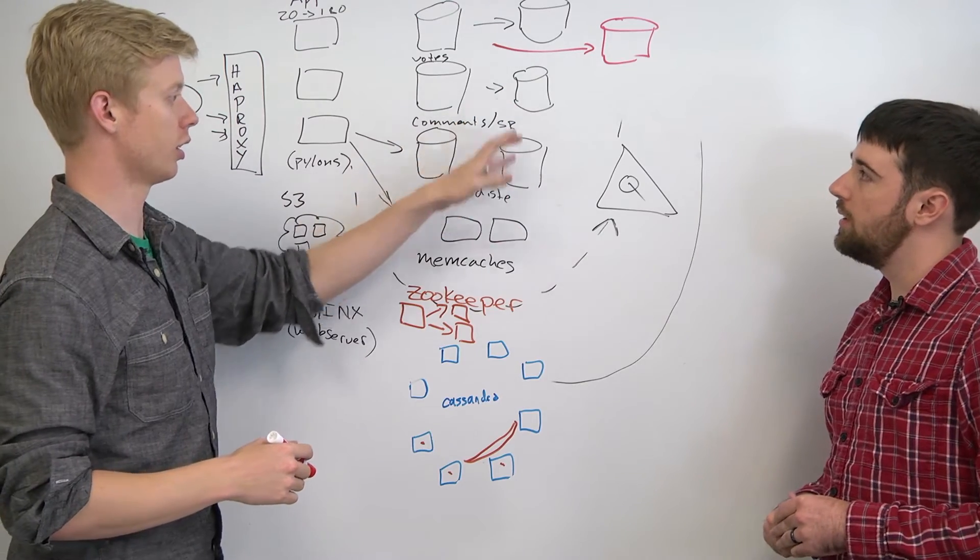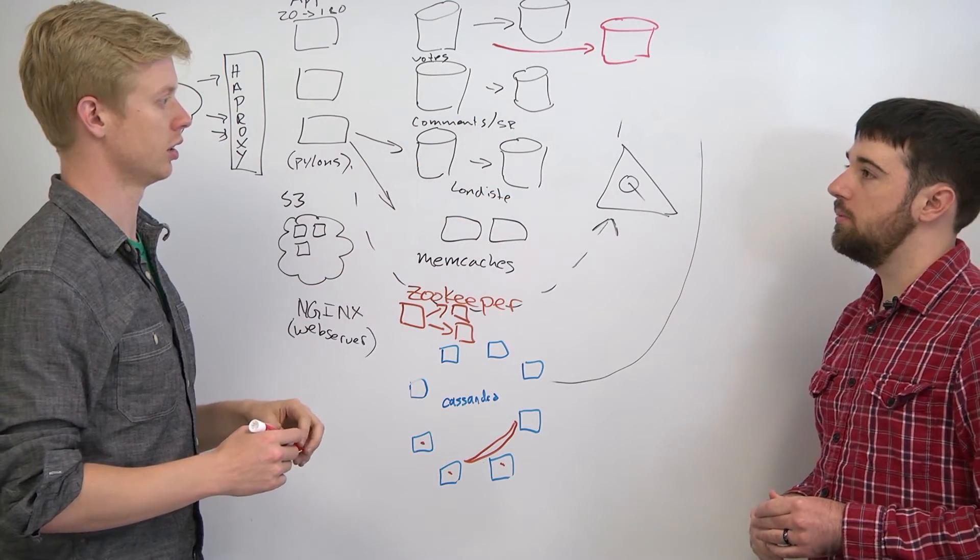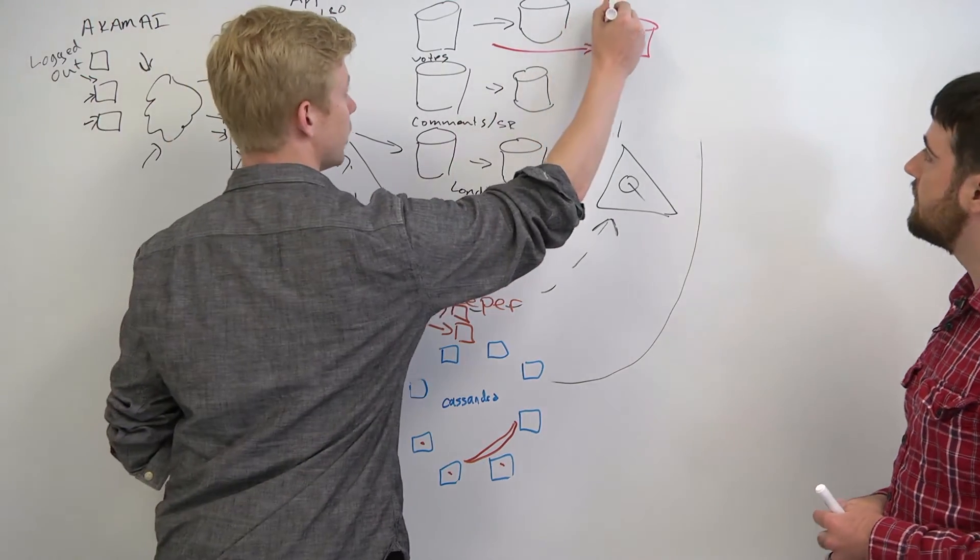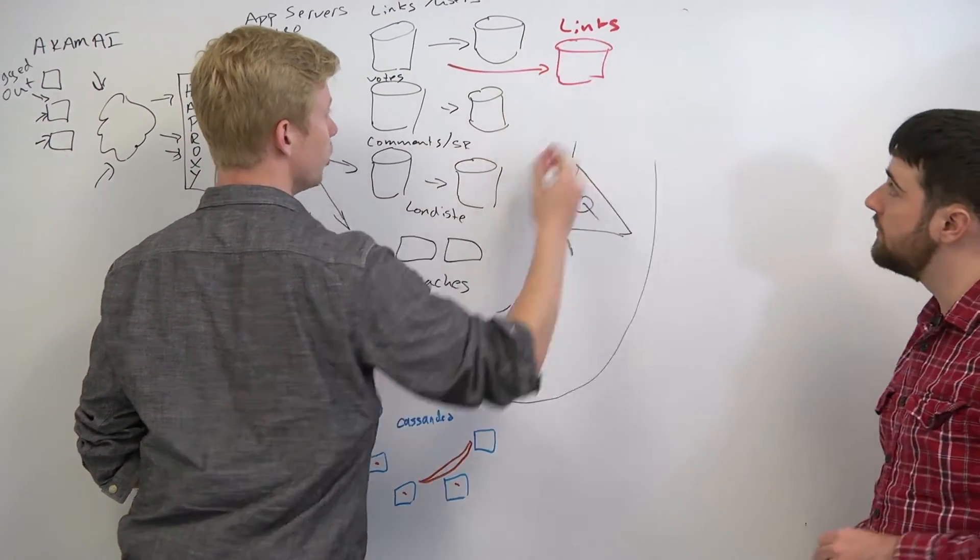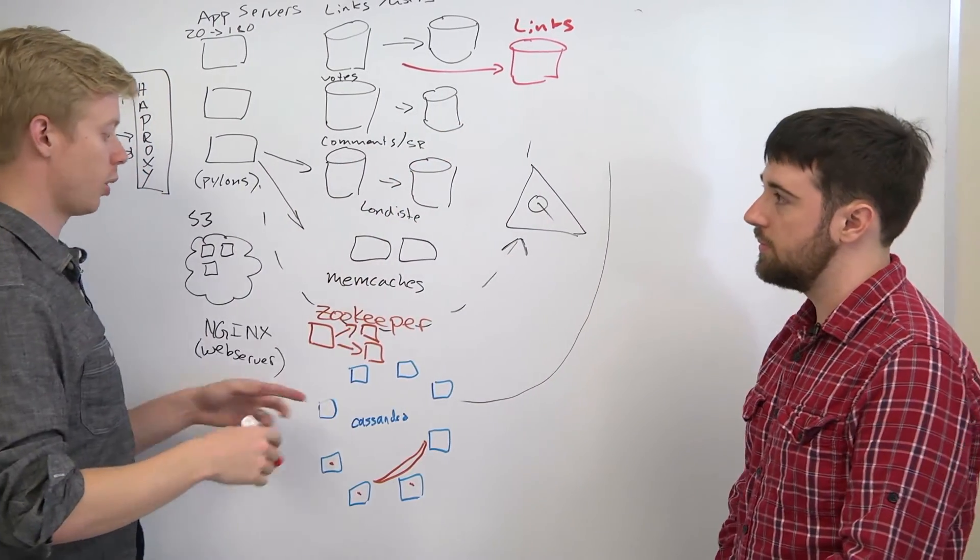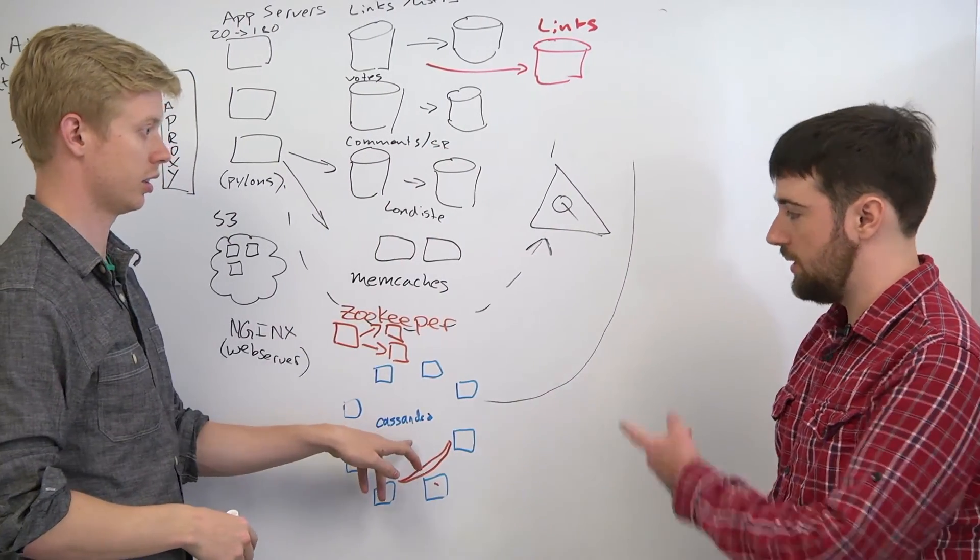Now, what about comments and votes? There's no actual queries that need that. Good point. So there's a special links database, and then you run MapReduce jobs on this every so often, and then that gets stored in Cassandra.